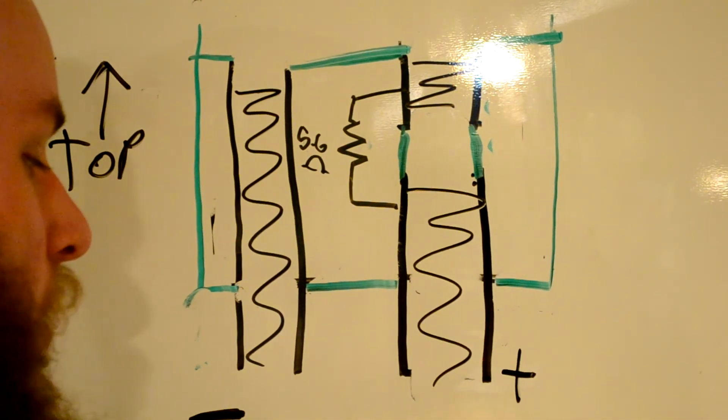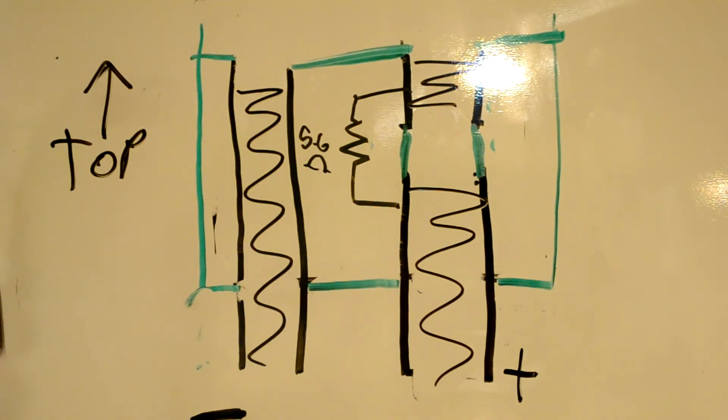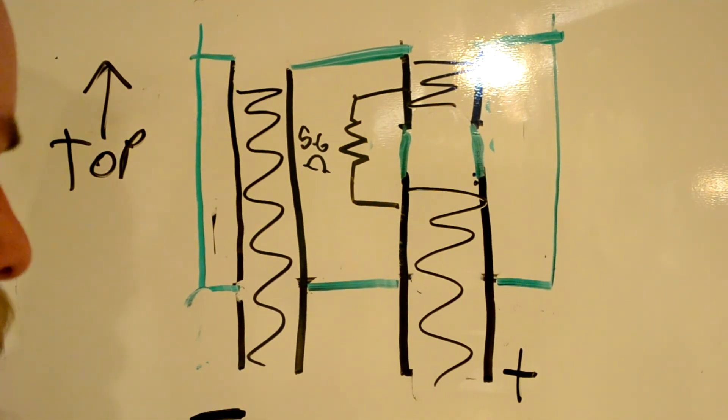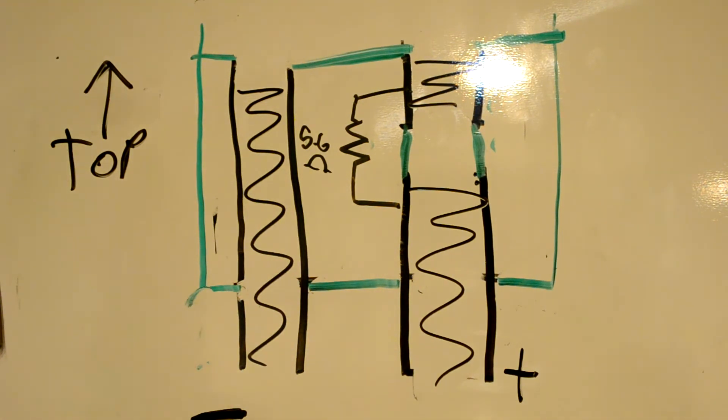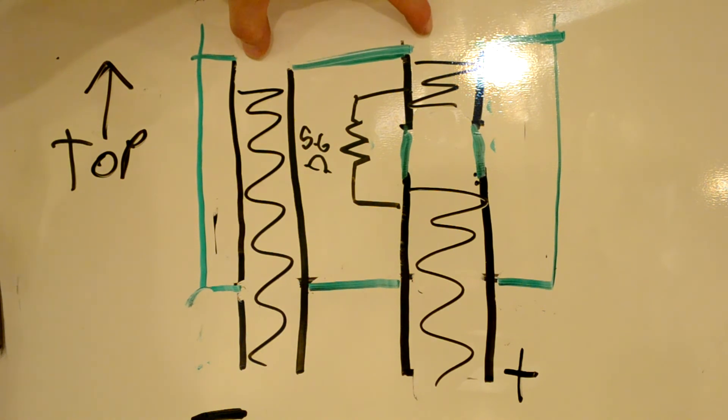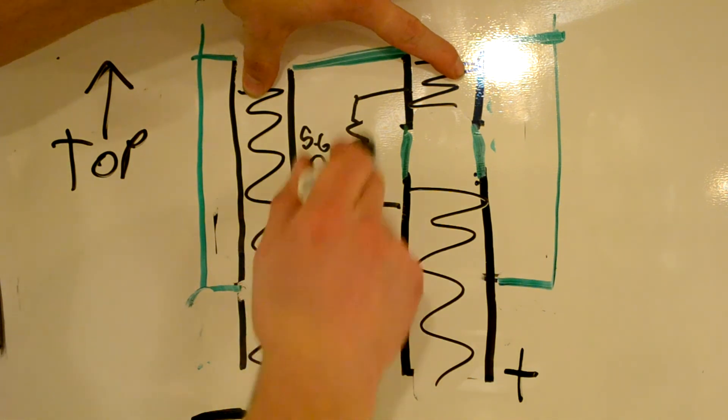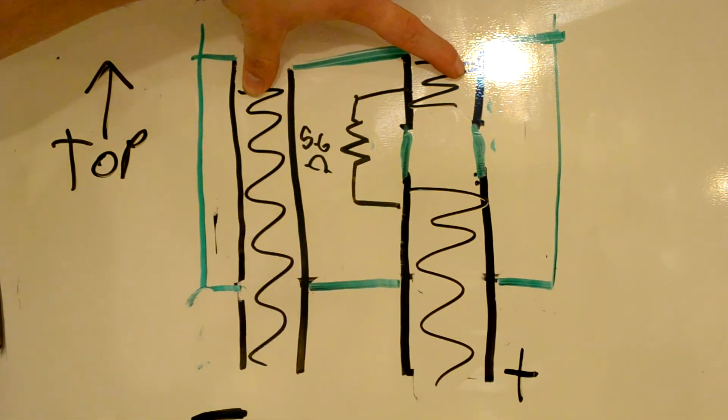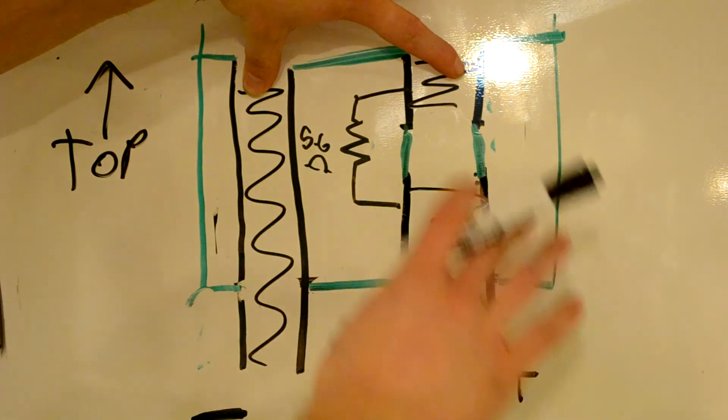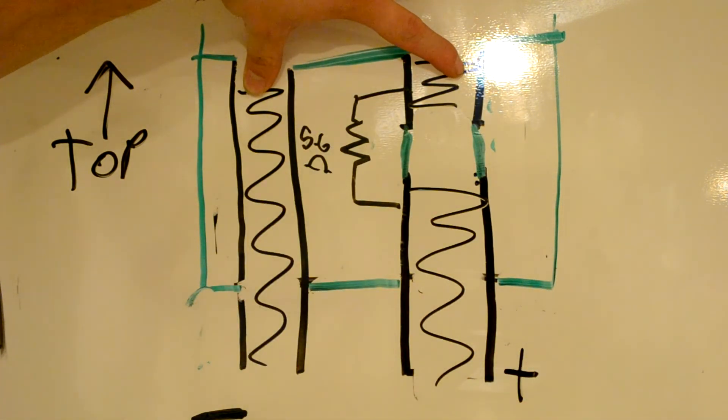I equals V over R. If we raise R, I goes down, right? Which is a very bad thing when we're trying to fly. But it's very important if we're trying to prevent a spark. So as you plug your connector into the aircraft, the first thing the other connector is going to make contact with is the negative and also the positive. Now, let's watch where the energy flows through the circuit. So if these are connected back to your battery, there is now 5.6 ohms of resistance with this resistor here built into the connector charging your capacitors and running the aircraft.